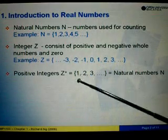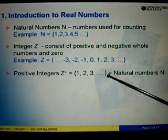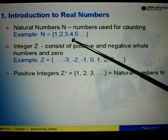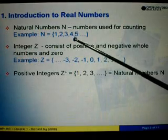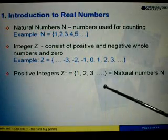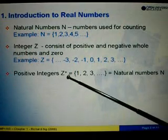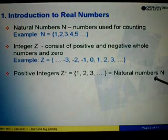So, positive integers begin with 1, 2, 3, and so on. And if you know that the natural numbers, which begin with 1, 2, 3, 4, they are similar. So, in other words, positive integers are actually natural numbers.